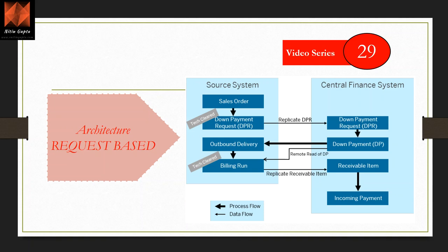After payment, a down payment is made from the process perspective. On the ECC side, you make an outbound delivery with PGI, and then billing is done from the process system. When billing occurs, a remote read of the down payment happens — for example, if total billing is $100 and $10 was paid as down payment, the system will only allow $90. That billing run is technically cleared in ECC and replicated as an open item in CFIN.